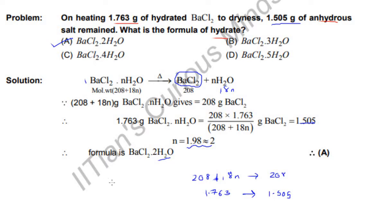If you want to solve, I will solve. 208 plus 18n... 1.763 upon 1.505 is almost 1.2, so 208 plus 18n equals 1.2 times 208. And yes, n... Thanks for watching the video.